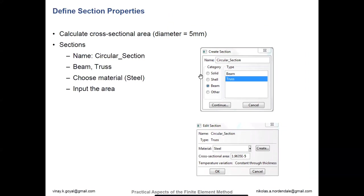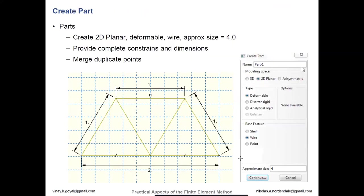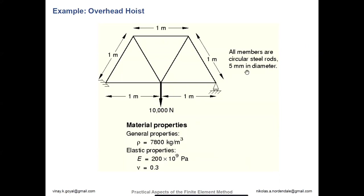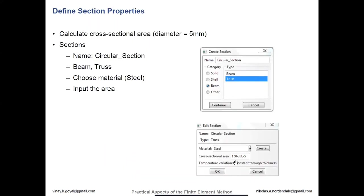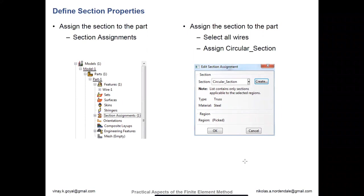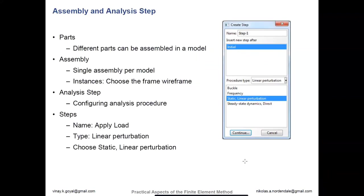You create a simple cross-section under Create Section type — it's a beam with a beam category, but a truss type where you can specify the material. This will be a drop-down menu where you pick the material you just created, and you input the cross-sectional area. Since we're using SI units, a 5 mm diameter is converted to 1.9635×10⁻⁵ square meters. Here are the section assignments, and then you can go through your parts assembly, create your analysis step, and in your step you apply the load, perform a linear perturbation, and choose static linear perturbation — that's our static analysis.